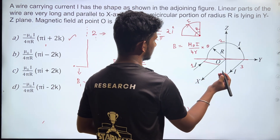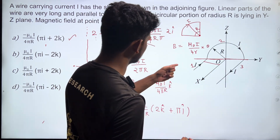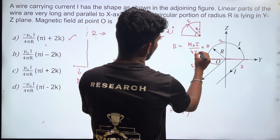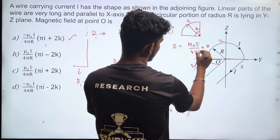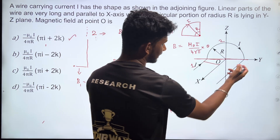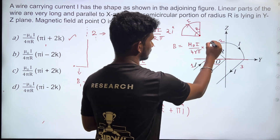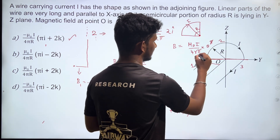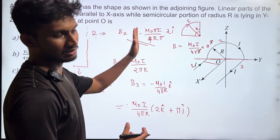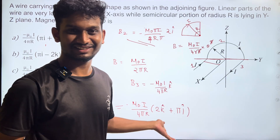I am so sorry, there is a mistake here. I think it should be 4π. So, in this case, we have θ here — θ is π. So, in this case, π cancels, giving μ₀i divided by 4R. I am so sorry for the error.